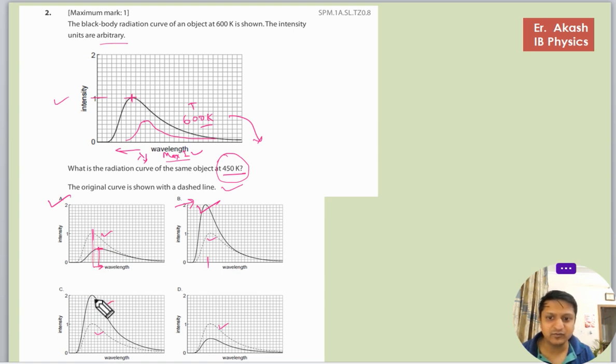And in this C graph also, the graph they had plotted has higher intensity and is more towards the left side. And in D option, the intensity is less but the lambda at which the intensity is maximum is on the left side. But it will not be on the left side, it will be on the right side.